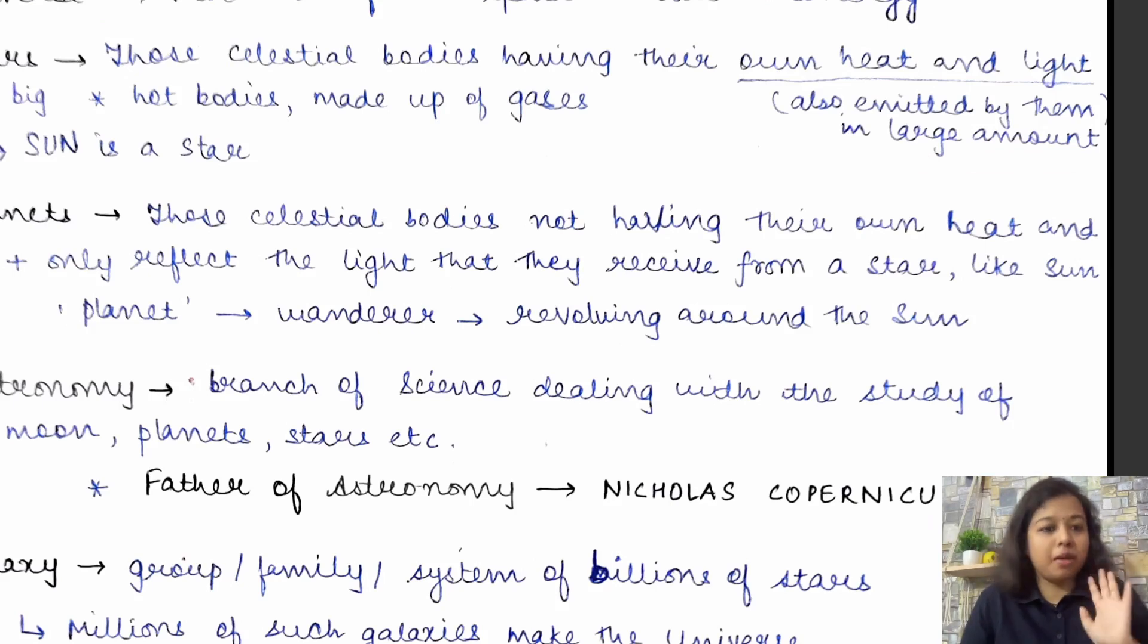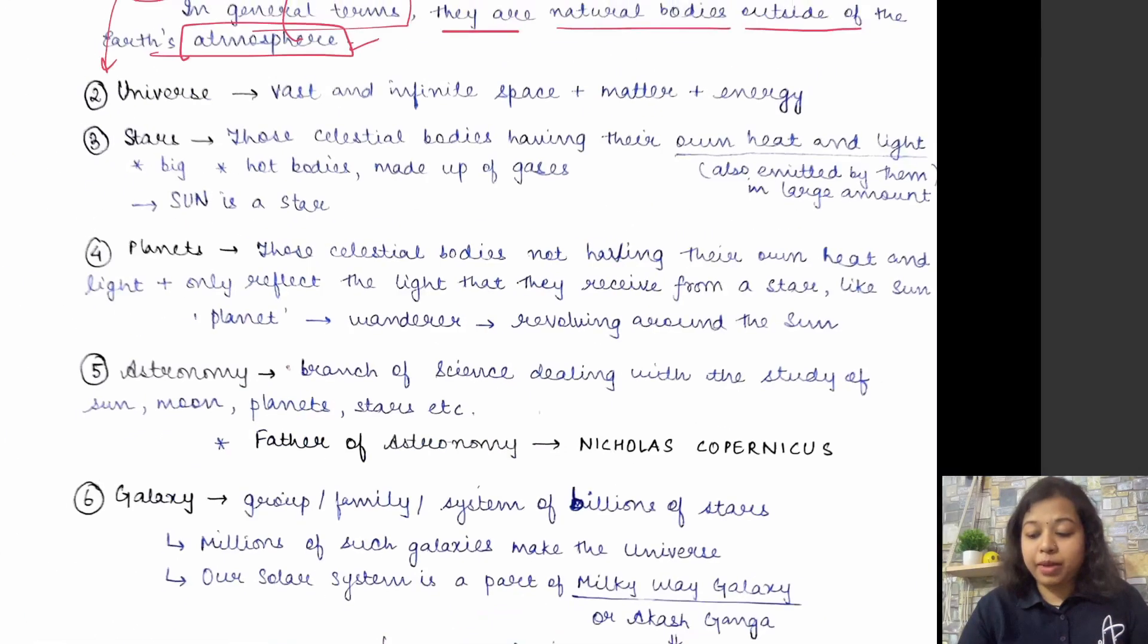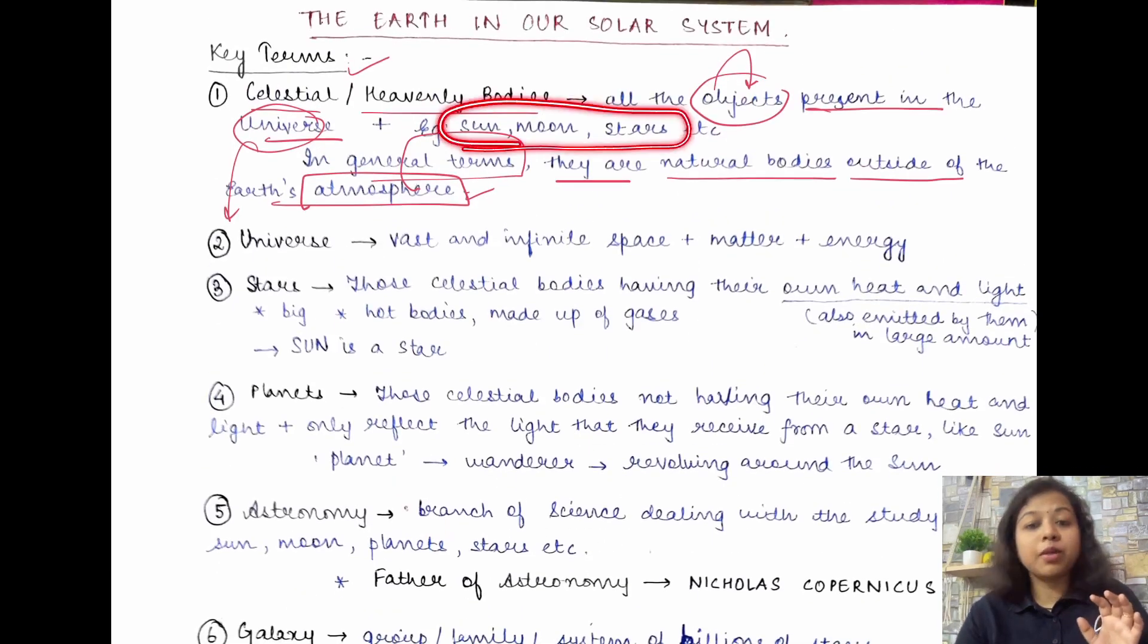So, heat aur light hoti hai, inki khud ki hoti hai. And they do not reflect it from somewhere. So, they have their own heat and light. And secondly, they emit them in larger amount. They are of course very big stars. And they are hot bodies made up of the gases. Example ki agar hum baat karein. There are many stars. Thik hai, ek to ho star hota hai jaise raat ko jo dekhte ho chamakta hua taara jo ab samajhte ho. Of course, that is star. But that to anyways, bachpan se hum samajhte aare hai. You know, that is what we already know since our childhood. But then you don't have to forget that if they ask you that sun kahan belong karei, sun kis category mein. So, sun is also a star.